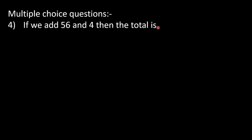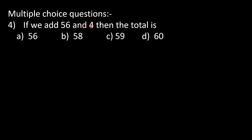In question number 4: if we add 56 and 4, the total is dash. Keep 56 in your mind and 4 on your fingers. After 56, count 4 numbers: 57, 58, 59, 60. Our answer is 60. Options: A) 56, B) 58, C) 59, D) 60 — so option D is correct.